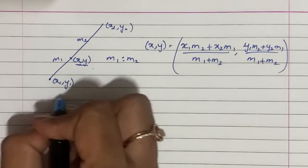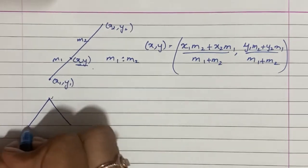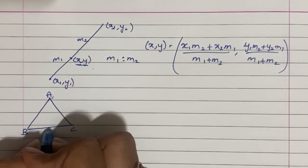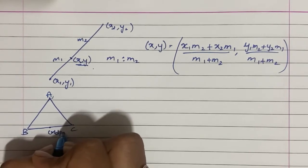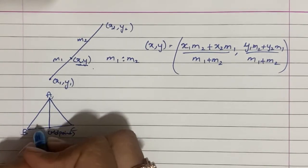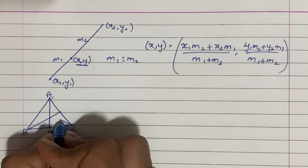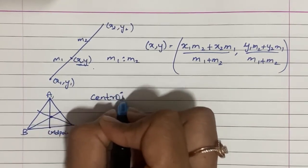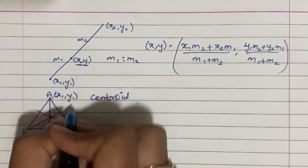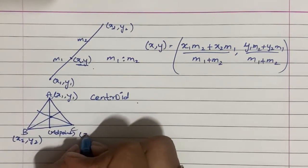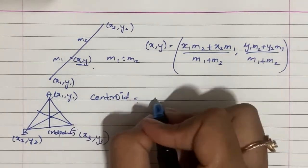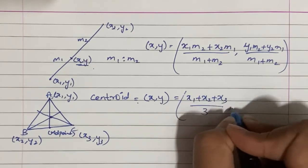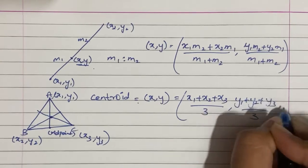Next, let's look at a triangle. If we draw a triangle and find the midpoints of each side, then draw lines from each vertex to the respective midpoints, these three lines meet at a point called the centroid — the center of the triangle. If the three vertices have coordinates x1,y1 and x2,y2 and x3,y3, then the centroid coordinates are: x = (x1 + x2 + x3) / 3, y = (y1 + y2 + y3) / 3.